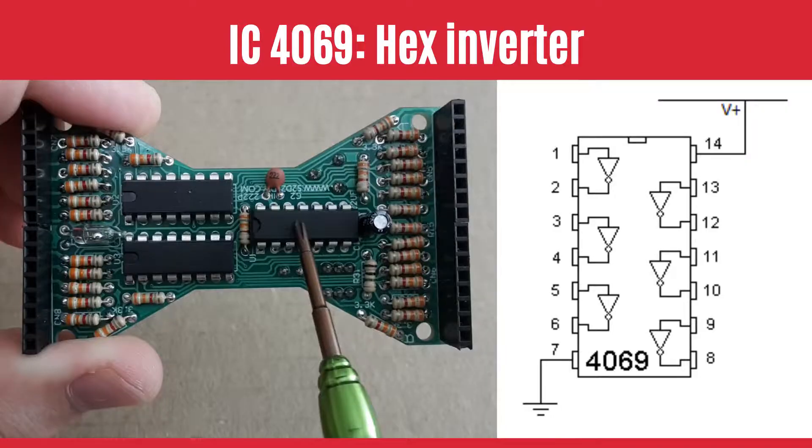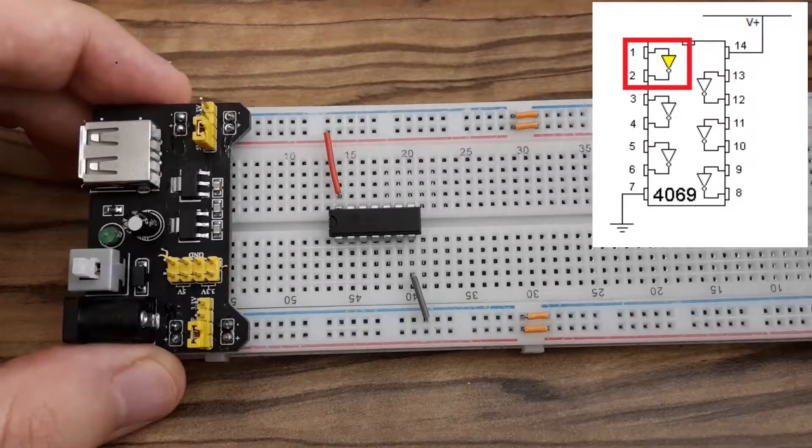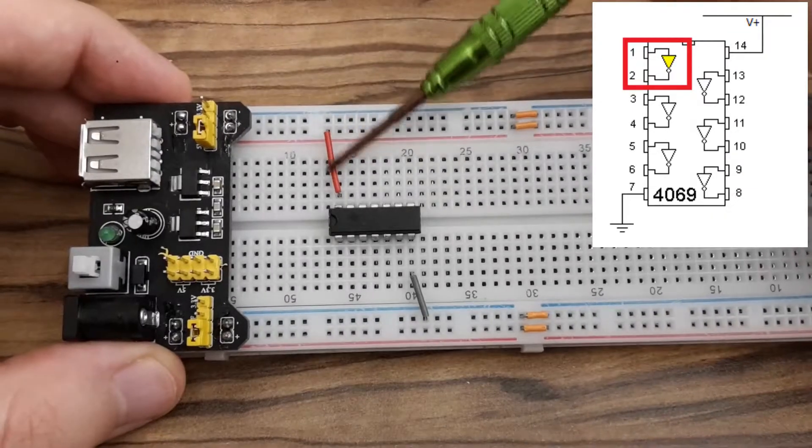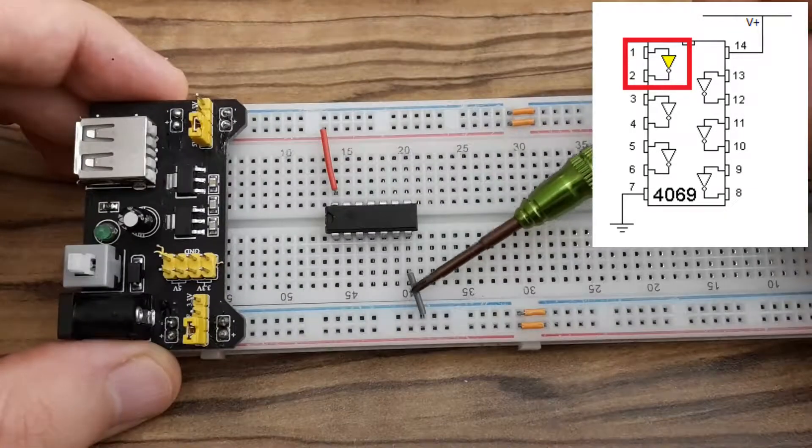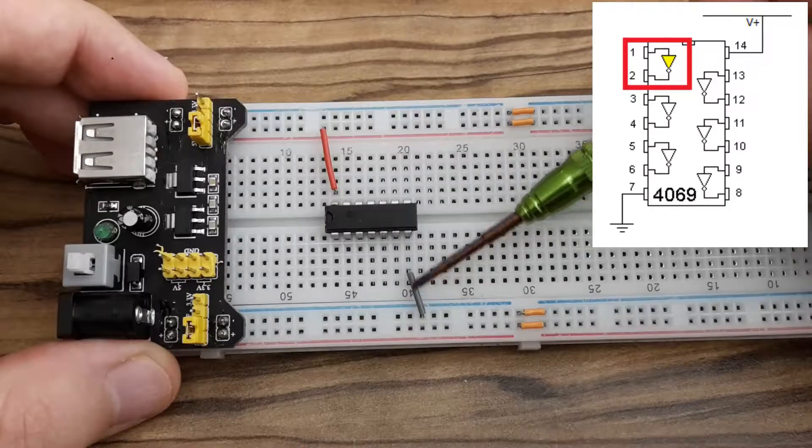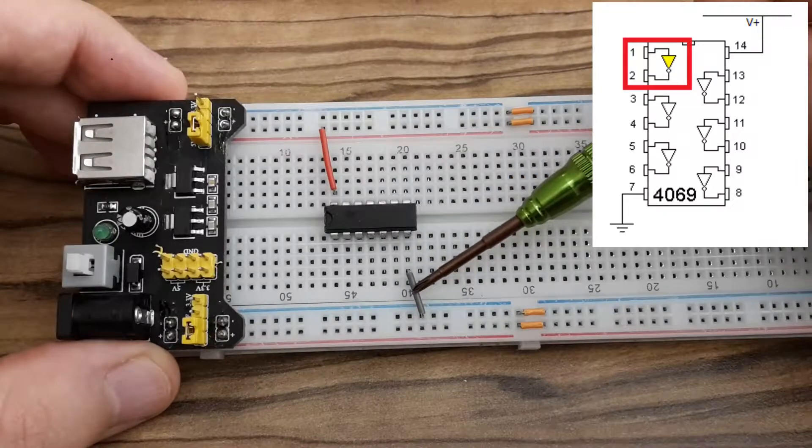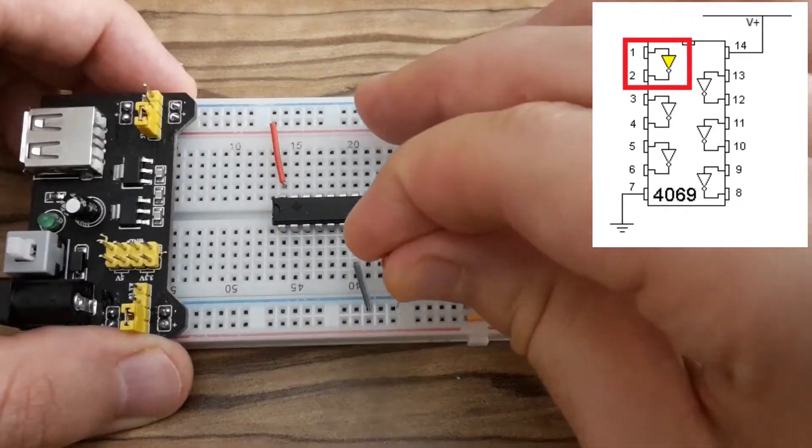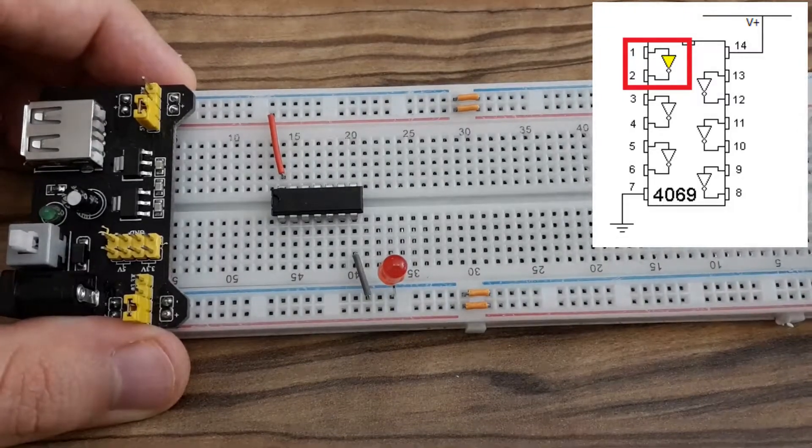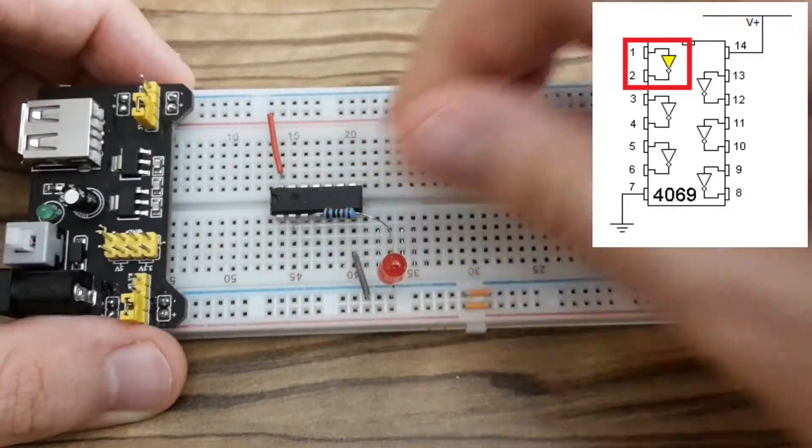Another IC which is used in the hourglass is this 4069 hex inverter. Let's explain it quickly. Pin 14 of the IC is connected to the 5 volts and pin 7 is connected to the ground. And now I'm going to show you its functionality on the first gate which is on pin 1 and 2.